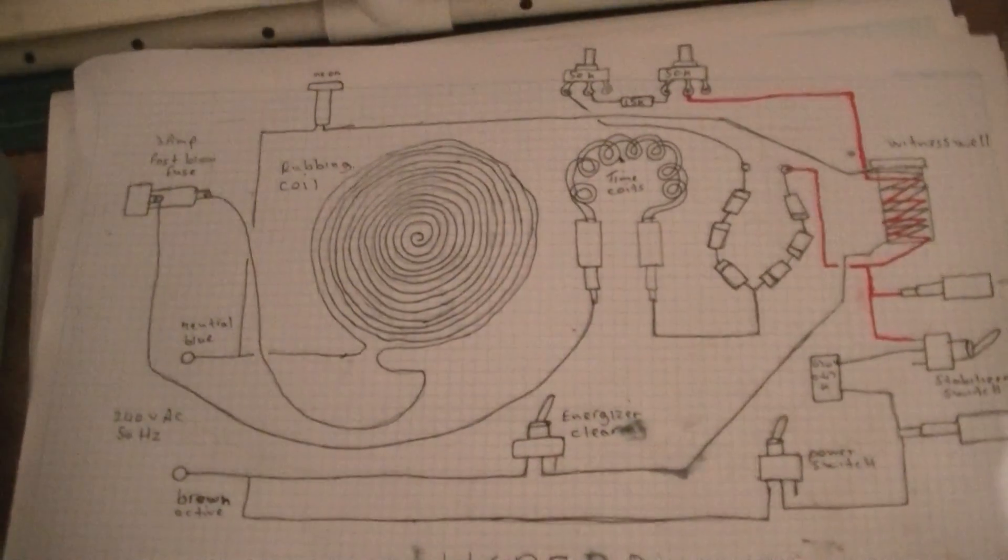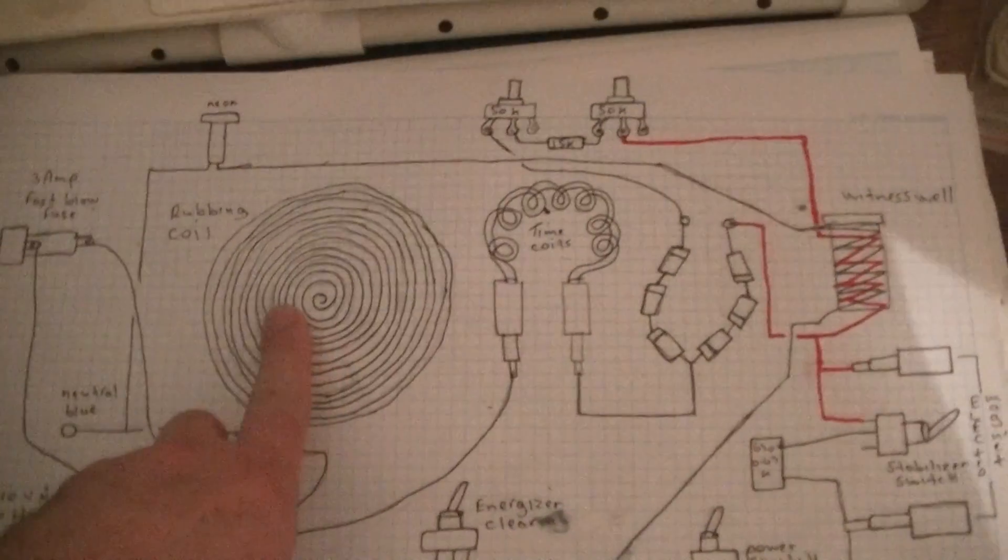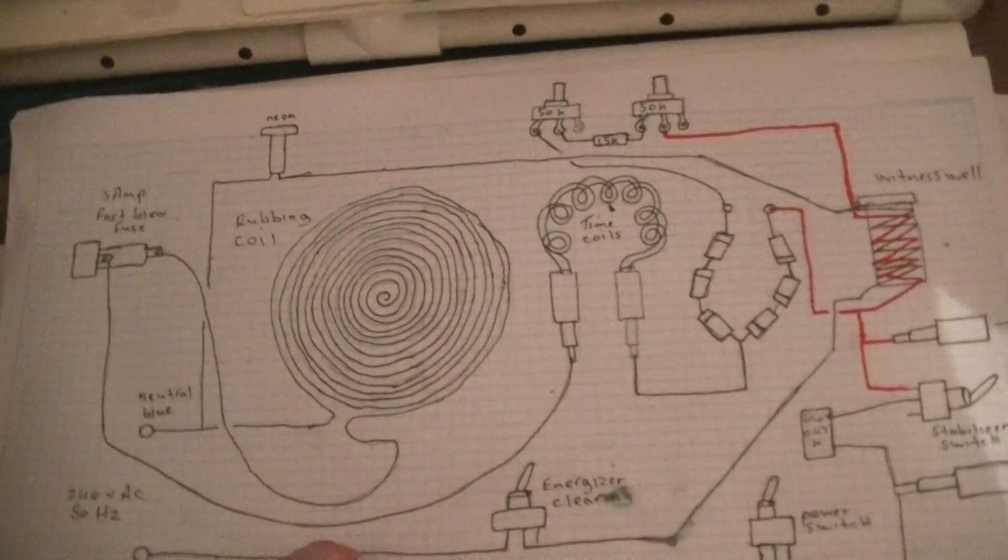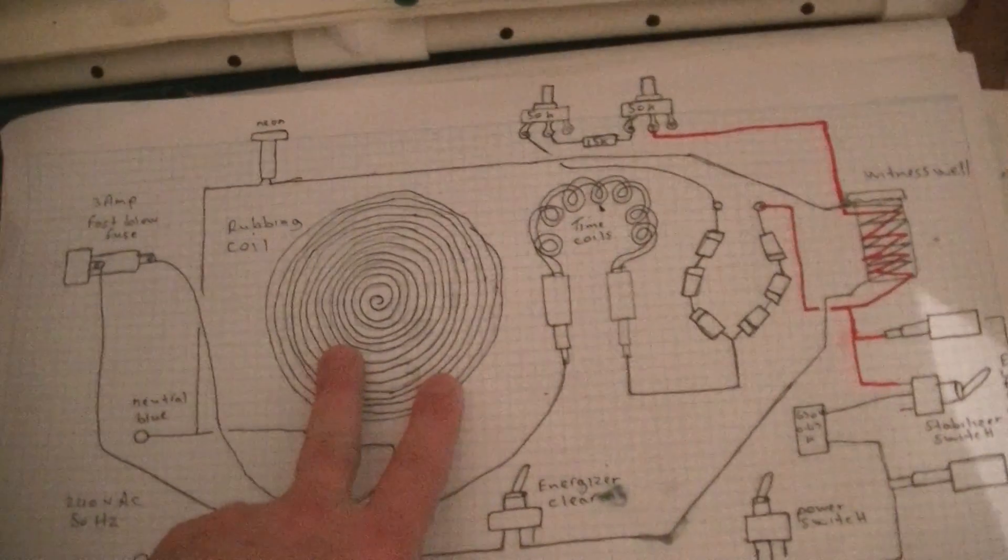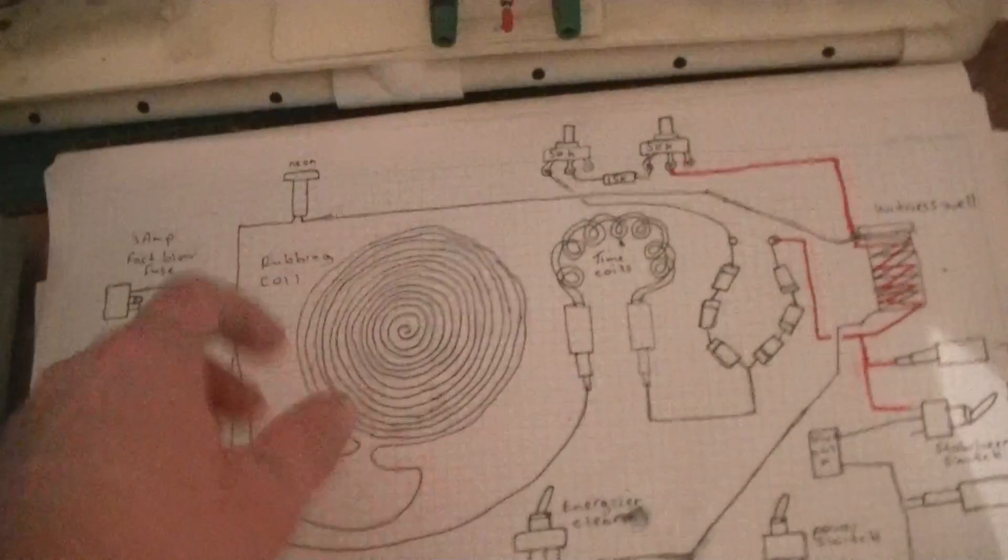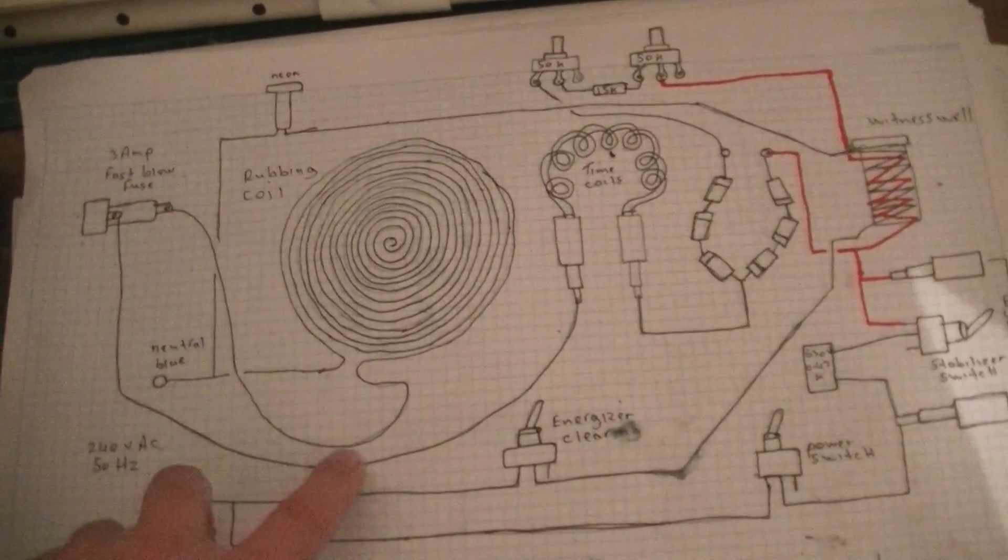Now this is the design here. This is a bifilar coil design, but I'm going to put a trifilar coil in it, which means I'll have three strands of wire twisted together and wound into a spiral.